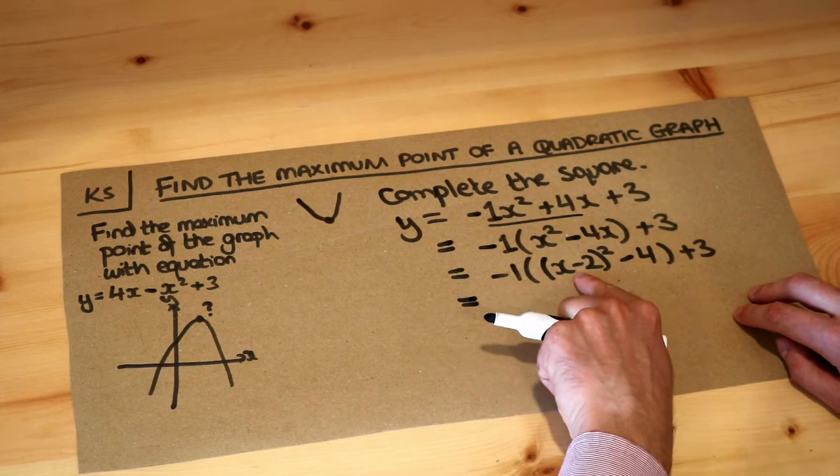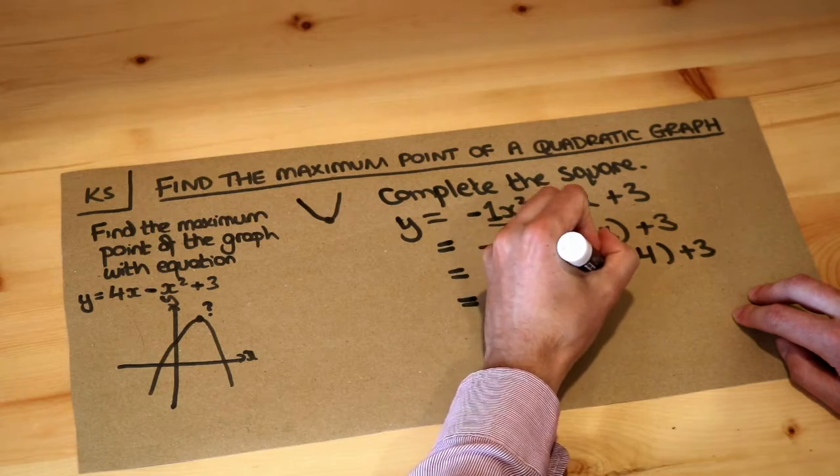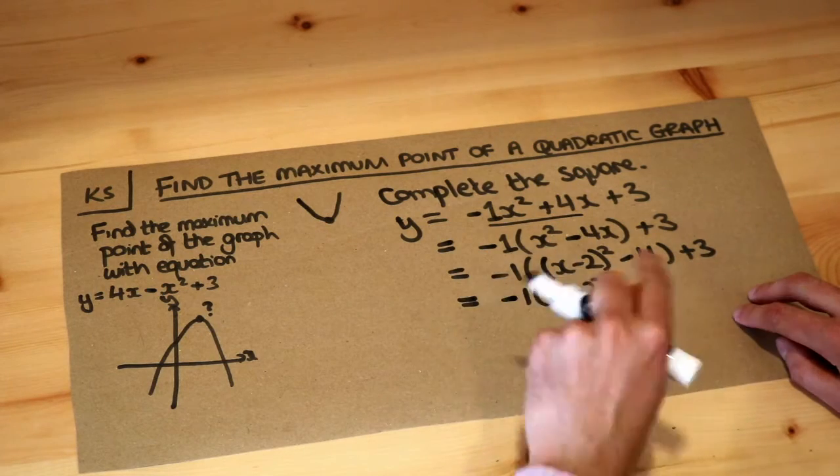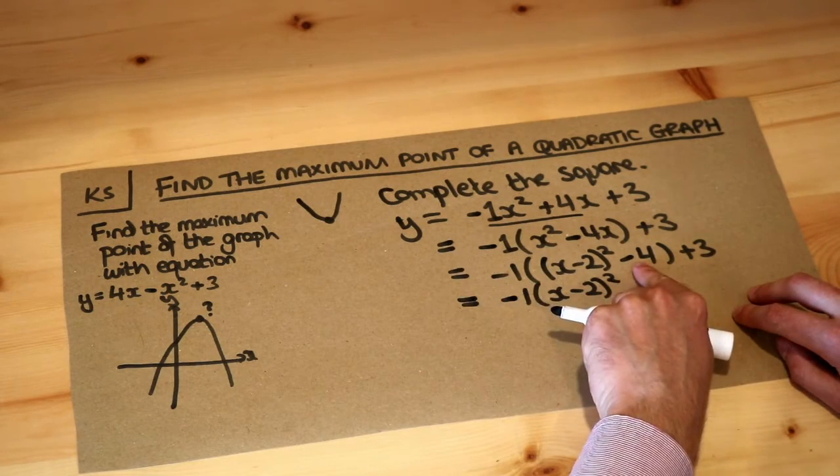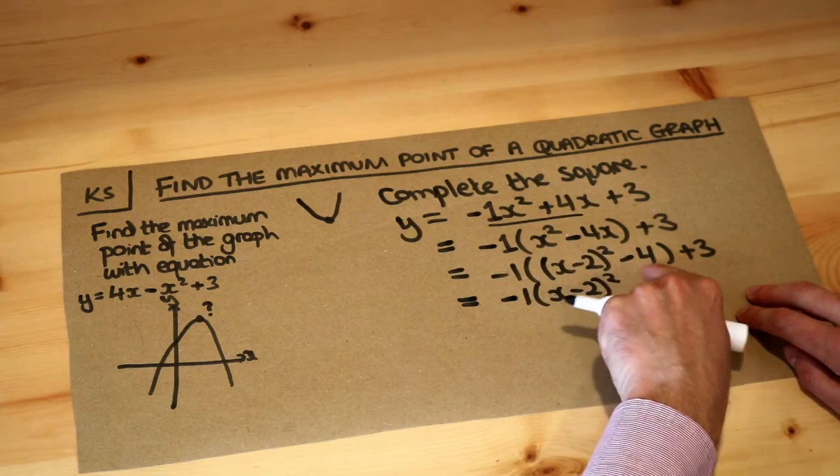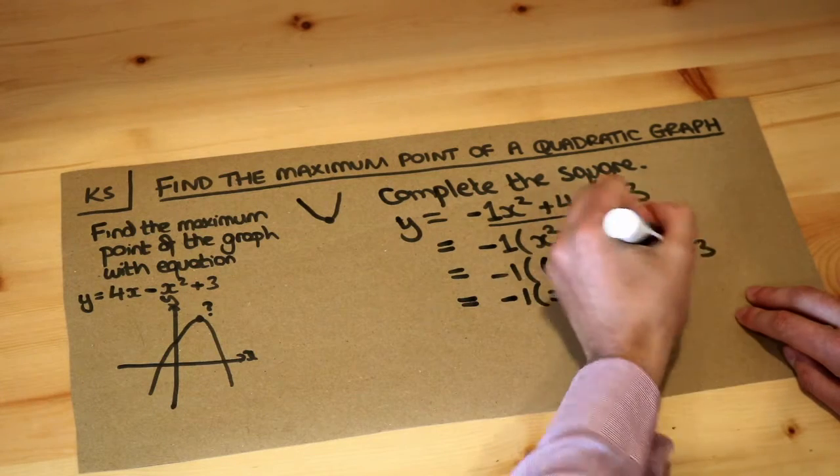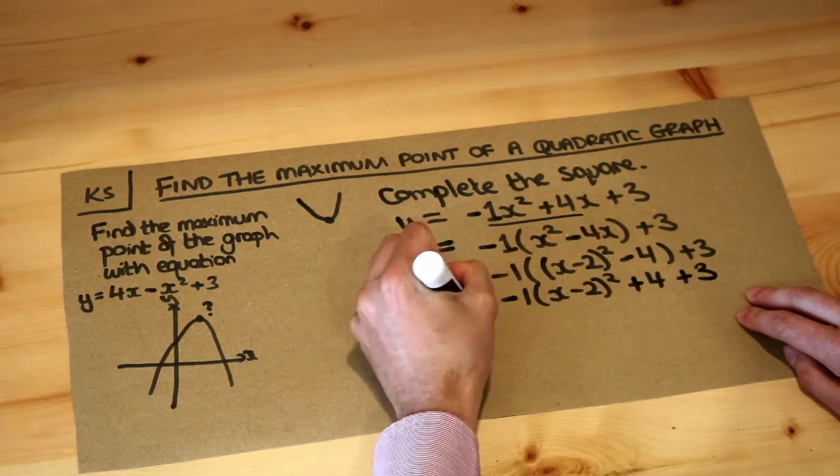So we do minus 1 times x minus 2 squared, which is minus 1x minus 2 squared. We don't expand out further, because we'll just get back to where we started. And minus 1 times minus 4, this is what students often forget to do. They forget that that minus 4 needs to be multiplied by that minus 1 to become plus 4. And we've still got that plus 3 hovering at the end.